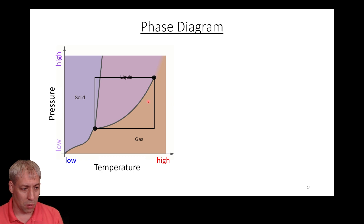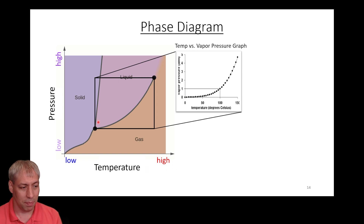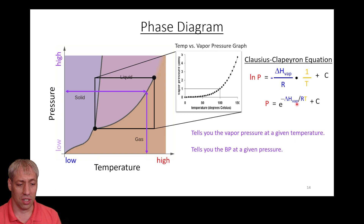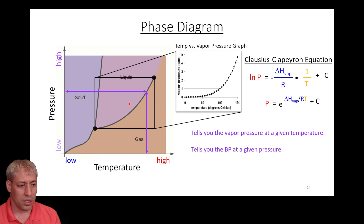Intrinsic to this phase diagram is our vapor pressure-temperature graph — that's what effectively dictates the liquid-gas relationship line. The difference between the vapor pressure graph and the phase diagram is that the phase diagram incorporates solids and all the various different transitions. Inside this graph is the Clausius-Clapeyron relationship between pressure and temperature, which gives you the delta H of vaporization. That dictates where the liquid-gas transition occurs, telling you the vapor pressure at a given temperature and the boiling point at a given pressure.